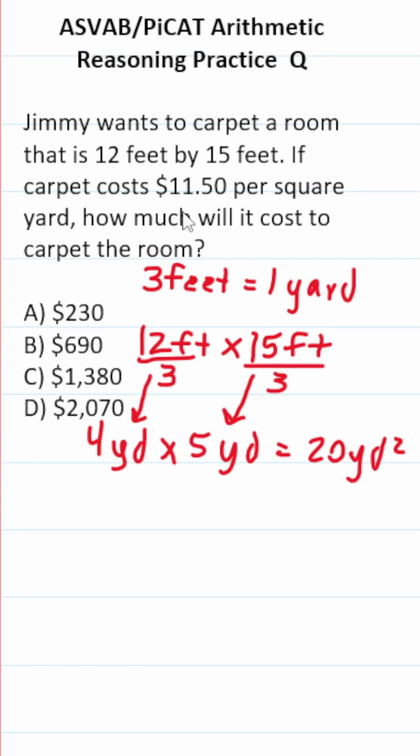An ASVAB PiCAT Arithmetic Reasoning Practice Test question: we're trying to figure out how much it's going to cost to carpet a room that's 12 feet by 15 feet if carpeting is $11.50 per square yard.